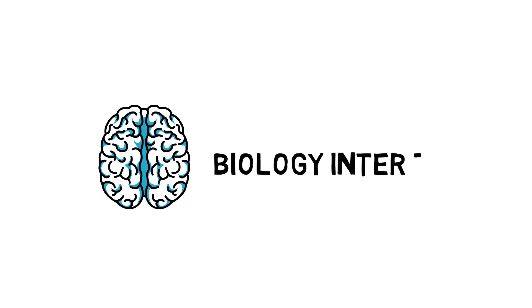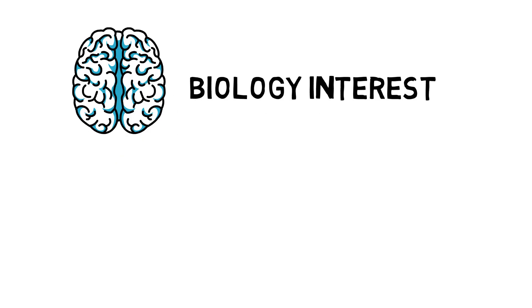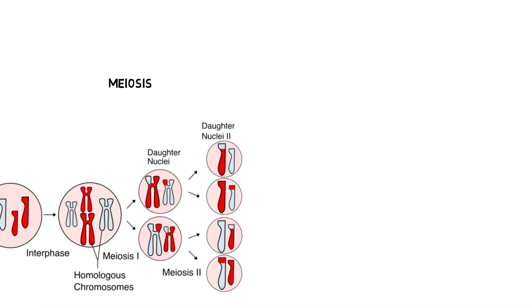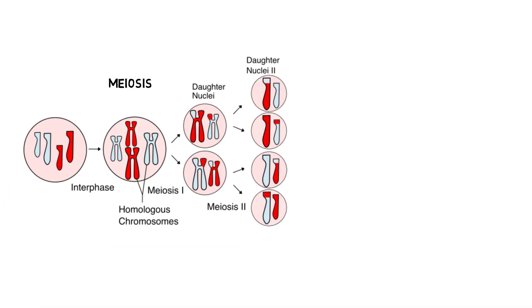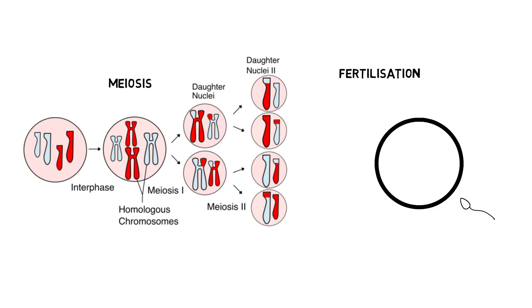Hello and welcome to Biology Interest. Today I'm going to be talking about sexual life cycles. Sexual life cycles involve an alternation between meiosis and fertilization. Meiosis is where a diploid cell gives rise to a haploid cell, and fertilization is where two haploid cells, also called gametes, fuse to form a diploid zygote.